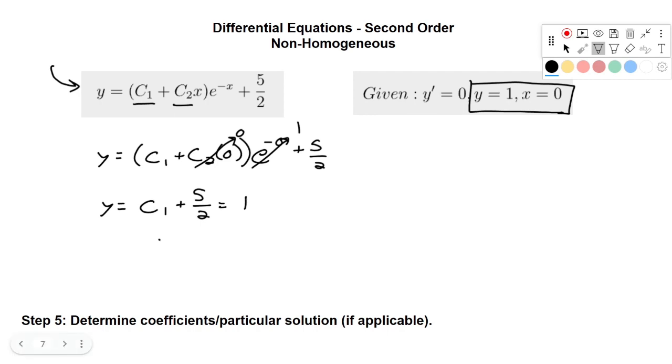So therefore, c1 is 1 minus 5 over 2, which equals negative 3 over 2. So now we've found our first coefficient, negative 3 over 2.